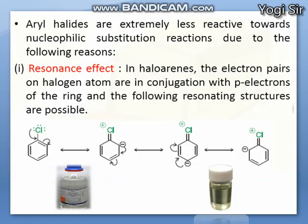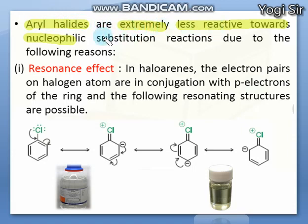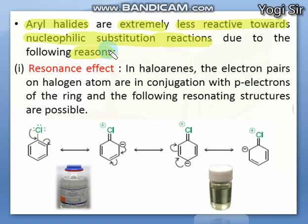As we know, most aromatic aryl halides are less reactive towards nucleophilic substitution reaction. As we have seen with alkyl halides in SN1 and SN2 reactions, alkyl halides can easily react with nucleophiles, but aryl halides are extremely less reactive towards nucleophilic substitution. SN1 and SN2 reactions very rarely occur in chlorobenzene, bromobenzene, or iodobenzene. What are the important reasons why they do not undergo nucleophilic substitution?